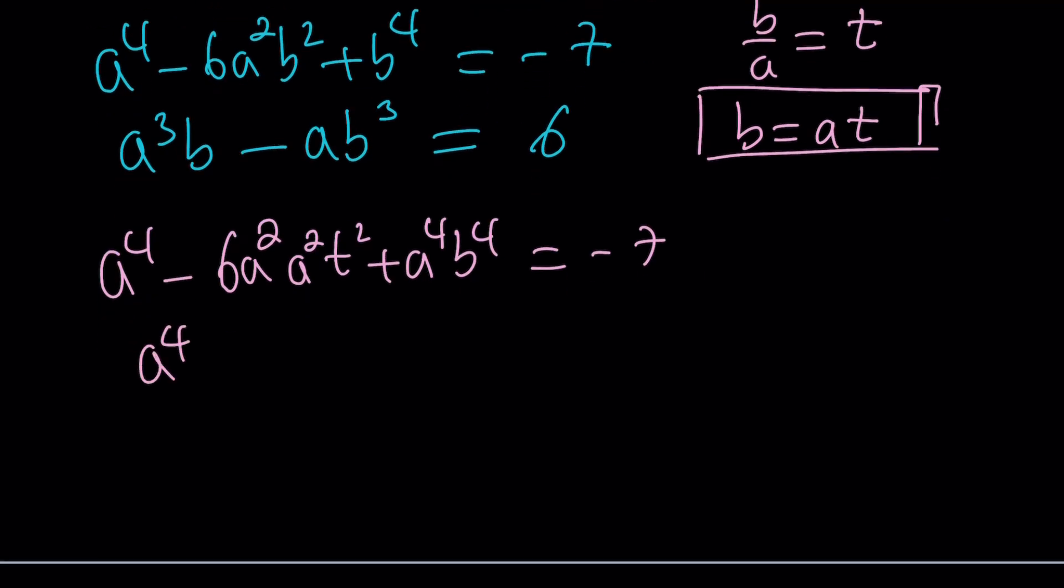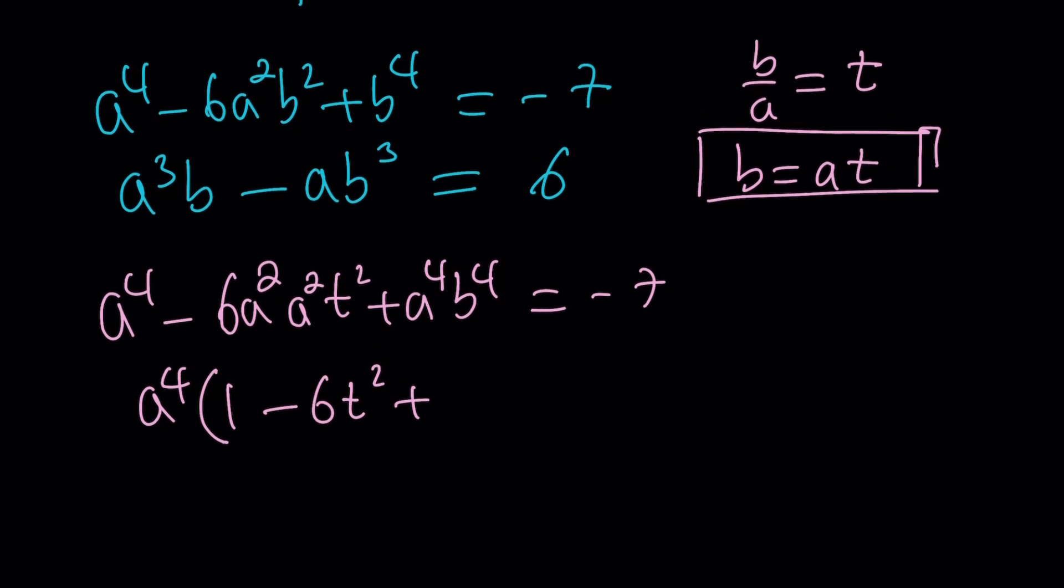So here, I can take out A to the fourth, 1 minus 6T squared plus, okay, wait a minute. I messed up here. A to the fourth, T to the fourth, not B to the fourth. This should be a T. Here we go. I'm like, what happened? We shouldn't have a B there. T to the fourth equals negative 7.